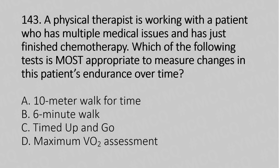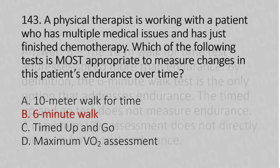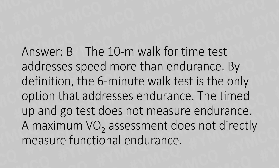And the answer is Option B: 6-minute walk. Explanation: The 10-meter walk timed test addresses speed more than endurance. By definition, the 6-minute walk test is the only option that addresses endurance. The timed up and go test does not measure endurance. A maximum VO2 assessment does not directly measure functional endurance.